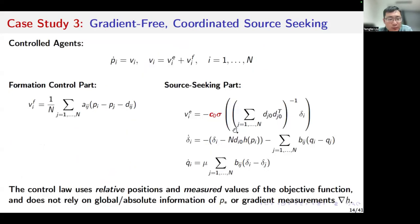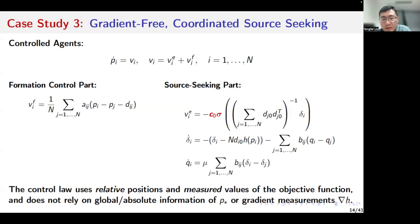I'd like to mention that the control law only uses relative positions to measure the values of the objective function and doesn't rely on global absolute information of the optimal point p*, or gradient measurements. This is the reason why we call the algorithm gradient-free.